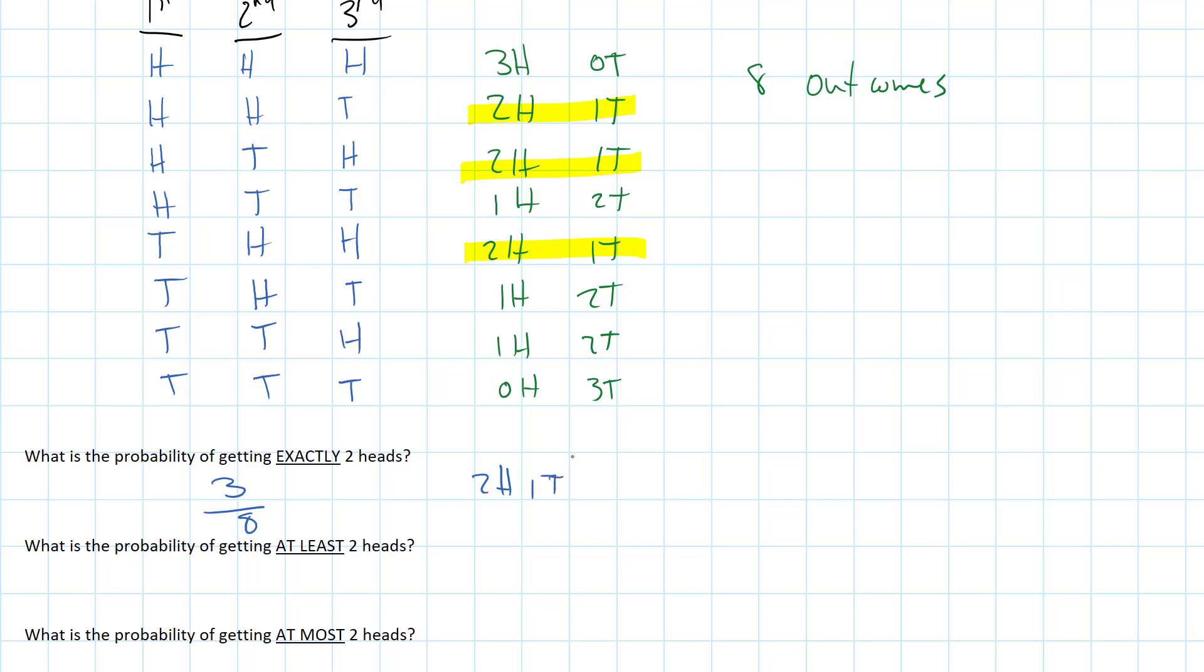What's the probability of getting at least two heads? Well, so I can say all of those two heads work. But I'm also allowed to say three heads because that's at least two. So I count four out of the eight ways. So that's two heads, one tail. Or I could take three heads, one tail. So I get exactly one half of the time. You're going to get at least two heads flipping three coins.